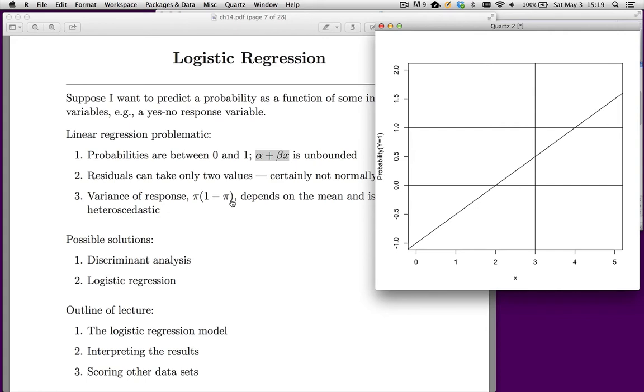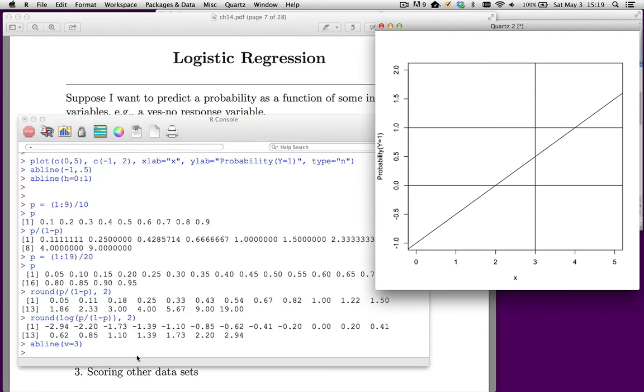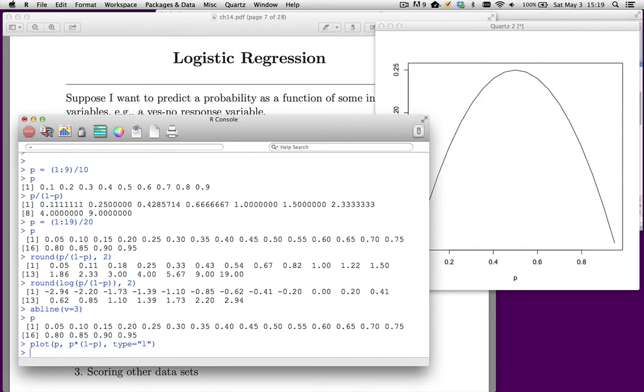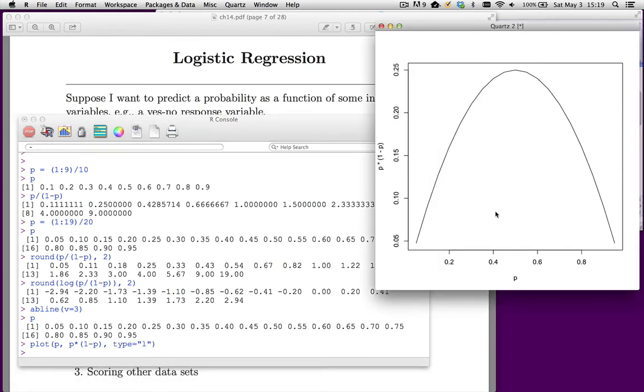Now, we could plot that. I made myself some p-values. So p goes from 0.05 to 0.95. I could plot p against p times 1 minus p. So this would be the variance. And let's make the type equals l. So we get a parabola.